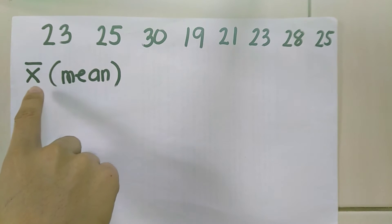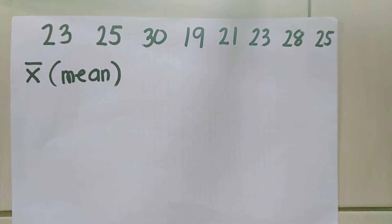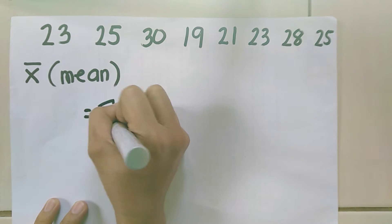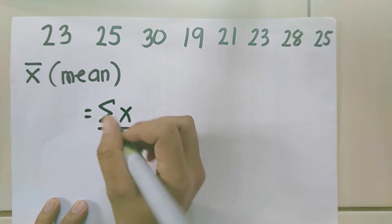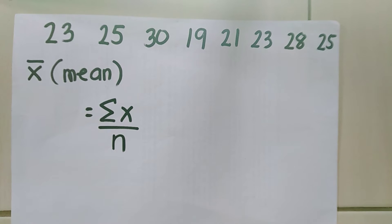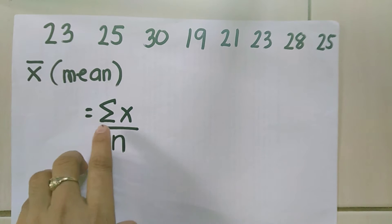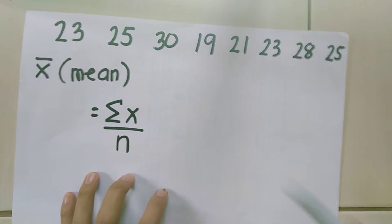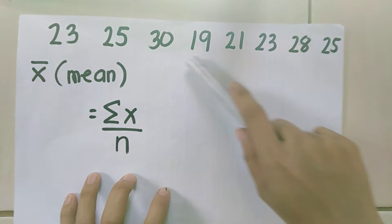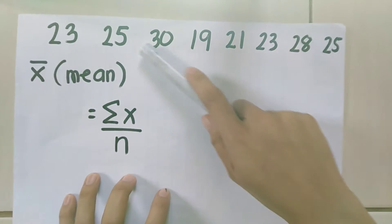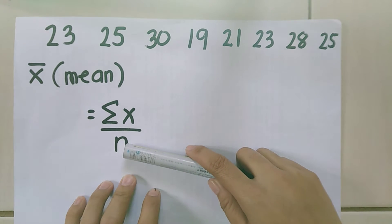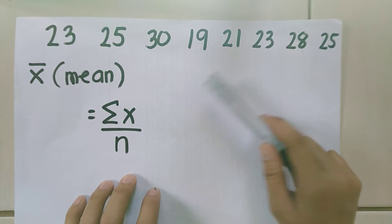This is the symbol for mean. In solving the mean of our data, the formula is the summation of x divided by n. Summation of x means our data — they are the x values. We are going to sum them all, then divide by n.